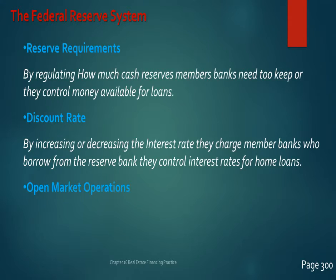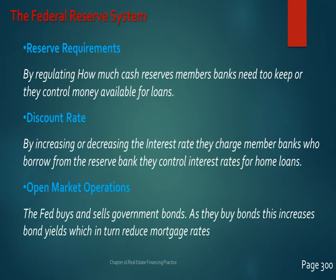Another major tool — which your book doesn't cover — is open market operations, used quite frequently by the Federal Reserve today. The Fed buys and sells governmental bonds. When buying bonds, it increases bond yields, making remaining bonds more expensive and raising their interest rates — which in turn reduces mortgage rates. There's an inverse relationship between bond rates and mortgage rates, so as the Fed buys up bonds, it keeps interest rates low.